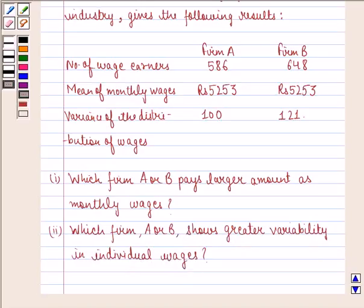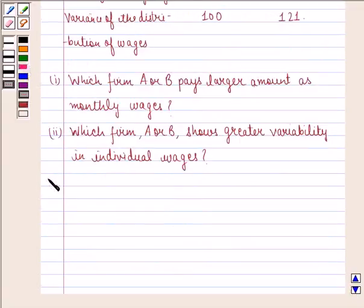We see that the mean of monthly wages for firm A is Rs. 5,253 and for firm B is also Rs. 5,253. So let us start with the solution to this question.